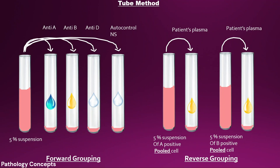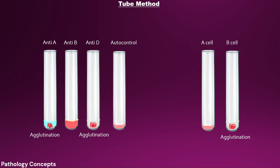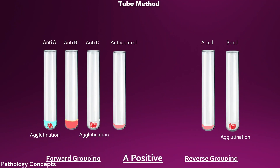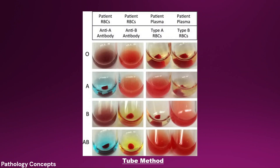The forward grouping identifies antigens present on the RBC, while the reverse grouping identifies antibodies present in the patient's plasma. The result shows agglutination in anti-A serum, anti-D serum, and with B cells in the reverse grouping, confirming blood group A positive. This is the actual photo showing agglutination of RBCs in the tube method.